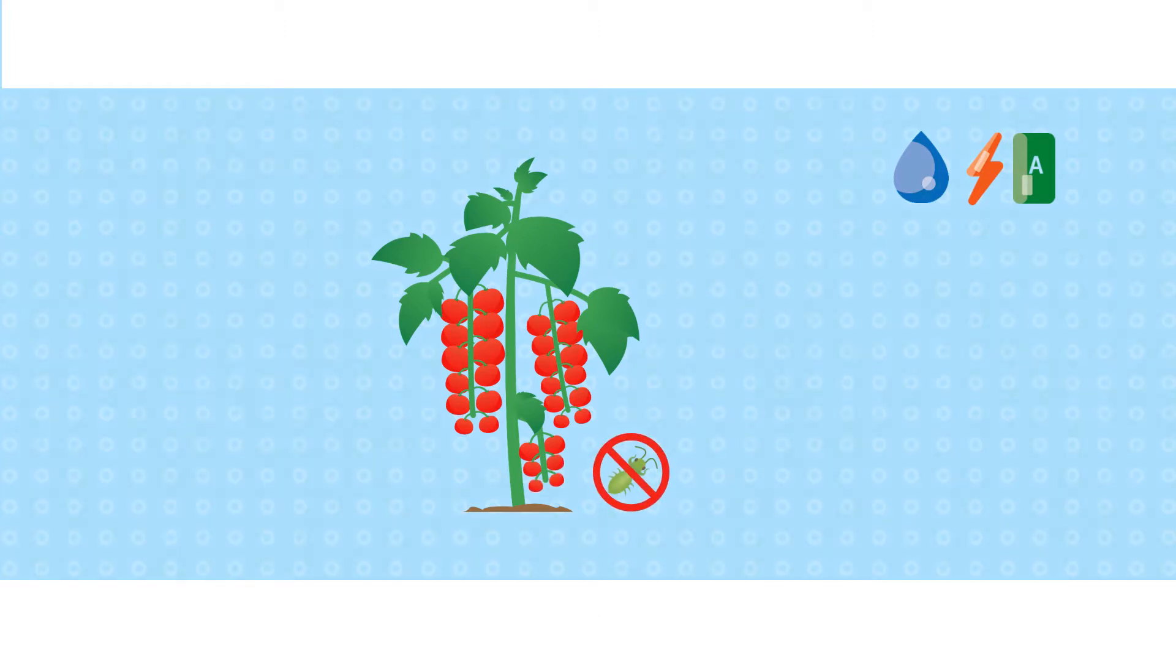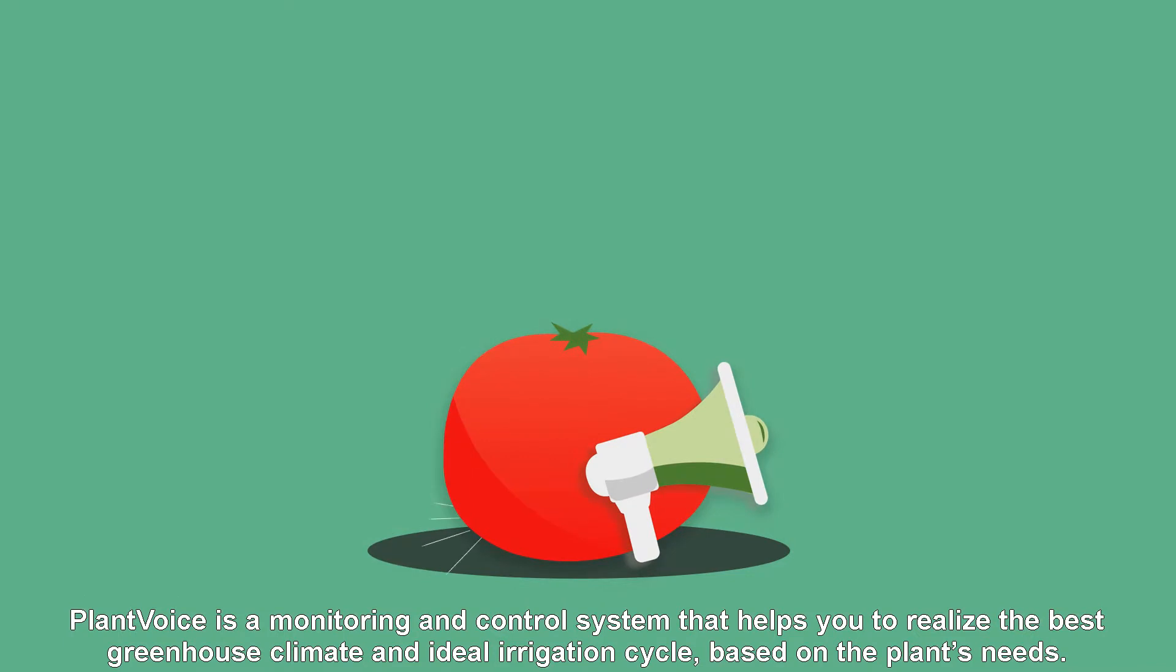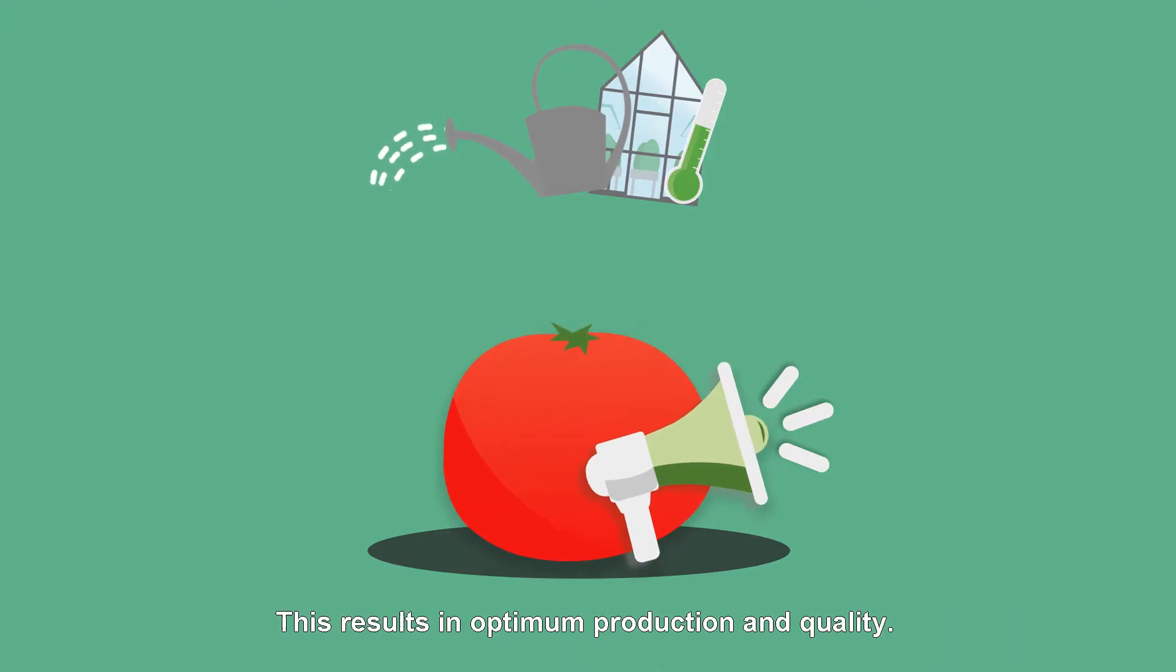So how to do this? PlantVoice is a monitoring and control system that helps you to realize the best greenhouse climate and ideal irrigation cycle based on the plant's needs. This results in optimum production and quality.